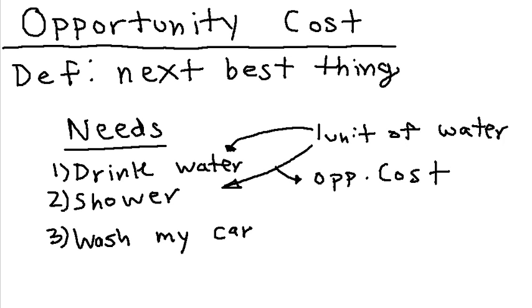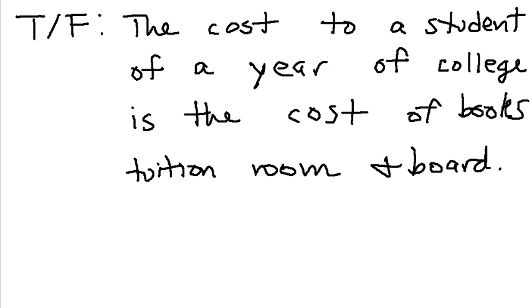Now, let's consider a question from the McCloskey book, related to opportunity cost, which really gets to the root of what opportunity cost is. So, true or false, the cost to a student of a year of college is the cost of books, tuition, room, and board. So, pause here and think for a little while about what the answer is.